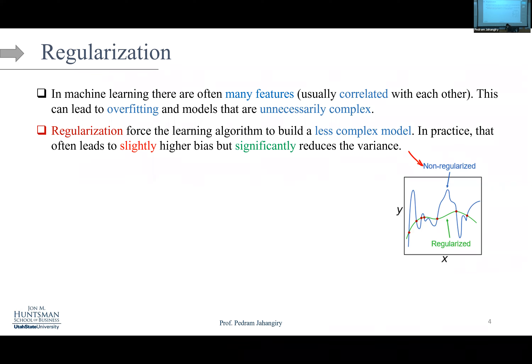You can think of regularization as shrinking the coefficients. Imagine a polynomial regression with x, x², x³, x⁴ — if the coefficient of x⁵ is very large, the curve goes wildly up and down. If you shrink that coefficient from 10 to 0.001, you're effectively getting rid of the x⁵ effect in the model. You're making the model less complex, adding a little bias, and hoping to reduce variance a lot.